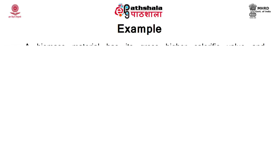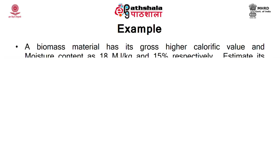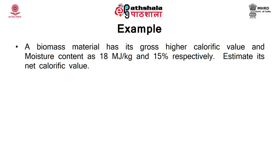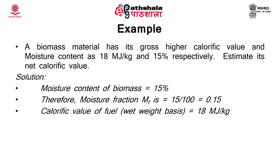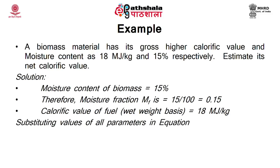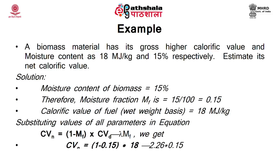Example: A biomass material has a gross higher calorific value of 18 MJ/kg and moisture content of 15%. Estimate its net calorific value. Moisture fraction Mf = 15/100 = 0.15. Gross calorific value CVw = 18 MJ/kg. Substituting into CVn = (1 − Mf) × CVd − λ × Mf: CVn = (1 − 0.15) × 18 − 2.26 × 0.15 = 14.96 MJ/kg.